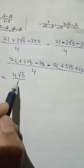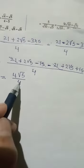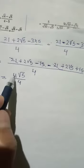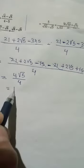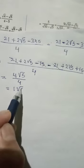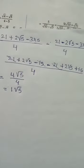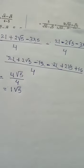Here you have 4 outside the root, 4 outside the root, so you can divide them. 4 divide 4 equals 1. So root 5 is under the root. After that we cannot do anything. That will be the answer.